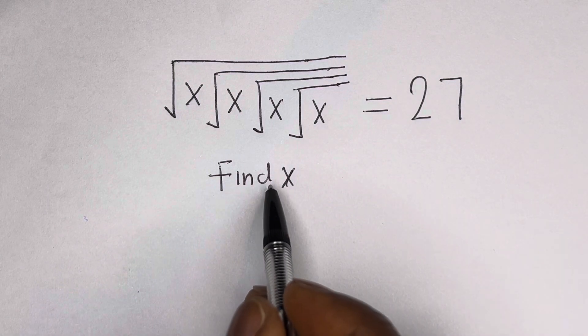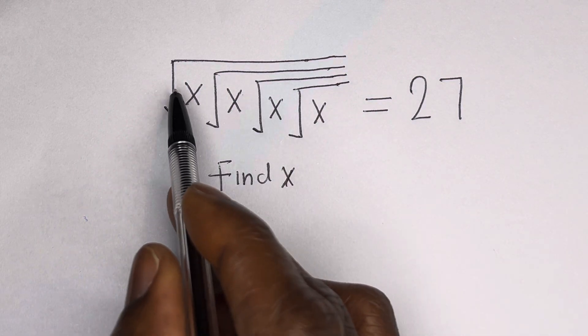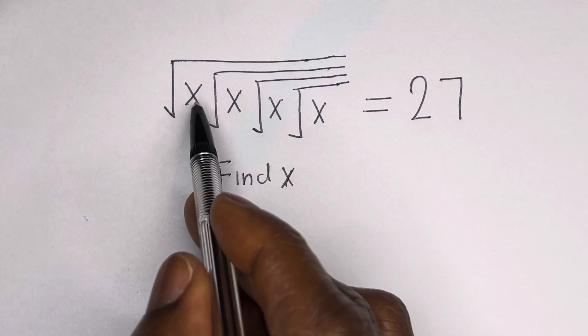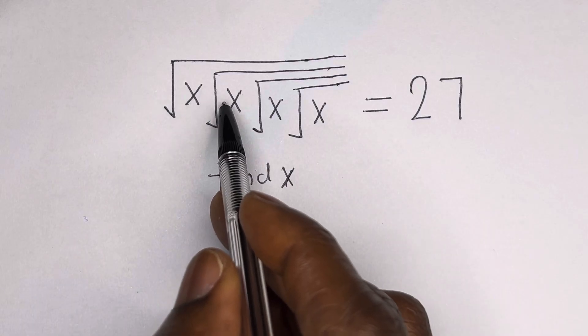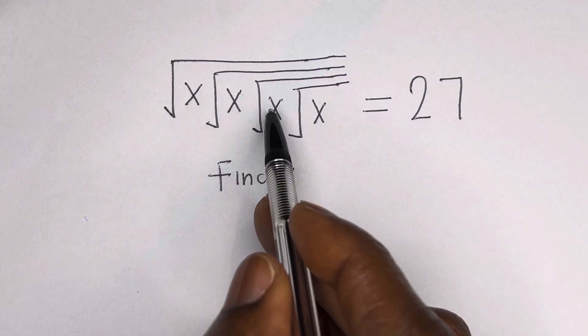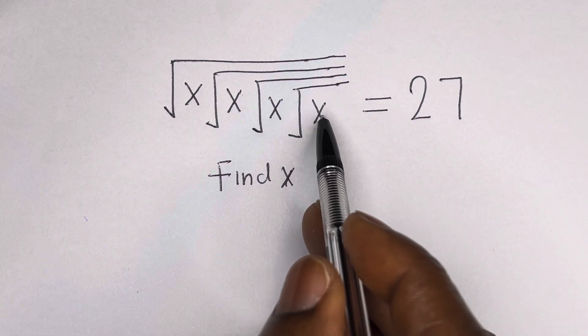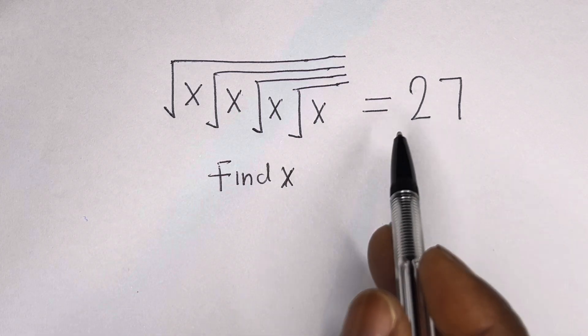Hello, how to solve for S in this equation: square root of S, square root of S, square root of S is equal to 27.